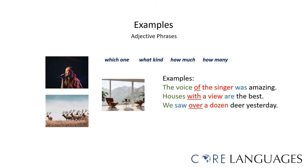We saw over a dozen deer yesterday. 'Over' is the preposition, and 'over a dozen' is the adjectival phrase that serves as an adjective to describe 'deer.'